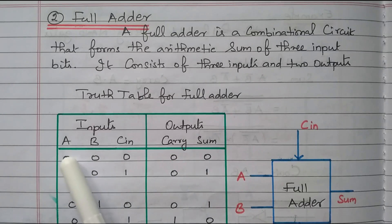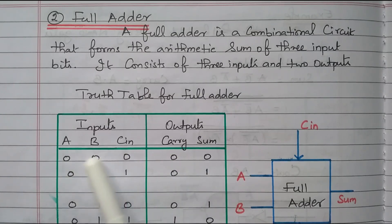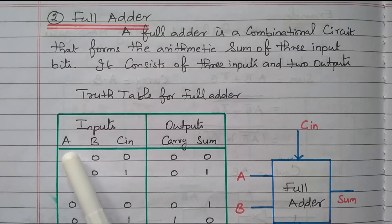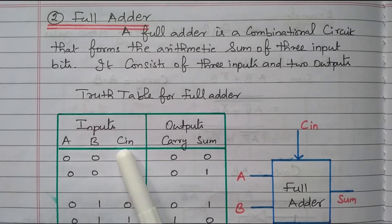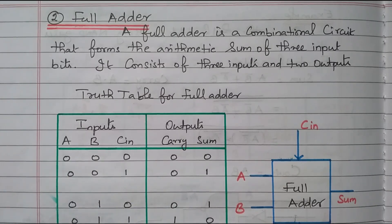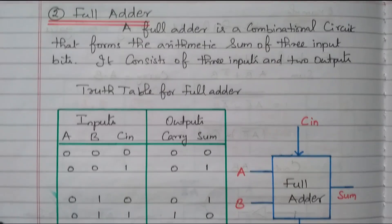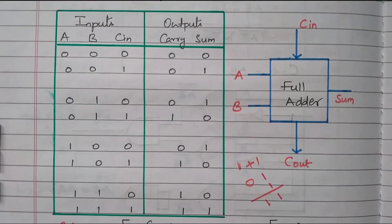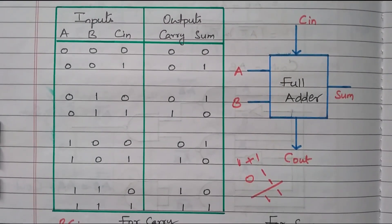Now we will discuss the truth table for the full adder. There are three inputs — A, B, and C — so there are eight combinations available: two to the power three gives eight combinations.